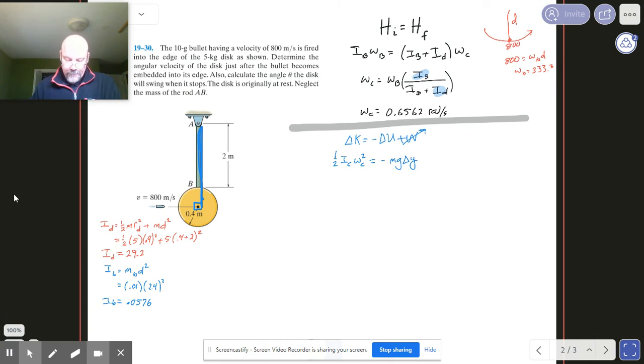Okay, so if we do some algebra on this thing, rearrange just a little bit, turns out delta y is going to turn into ic omega c squared over 2 mg. Now our combined ic value is our i d plus i of the bullet, and then we got our omega c squared number, over 2 m, and that's the combined mass, so it's the mass of the bullet plus the mass of the disk.